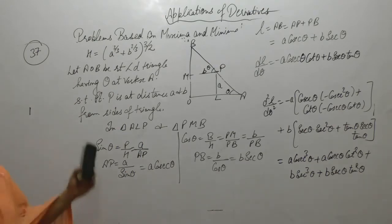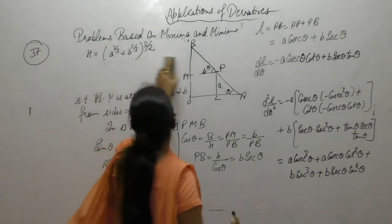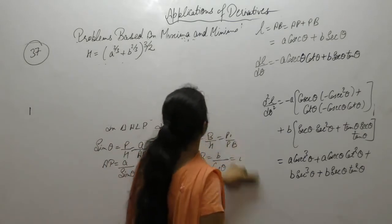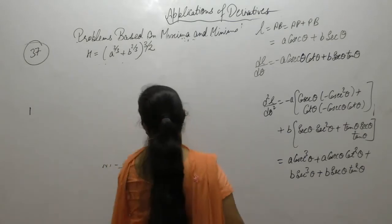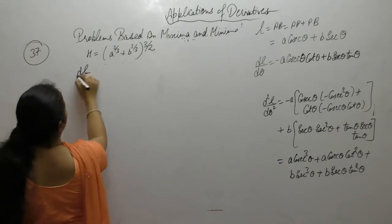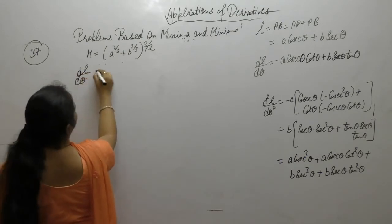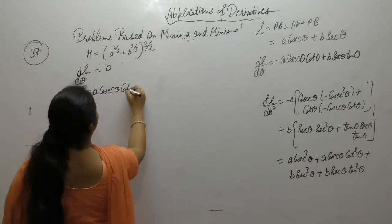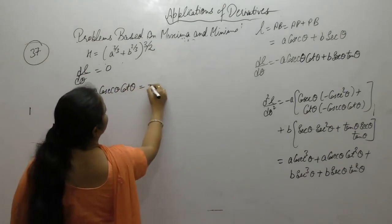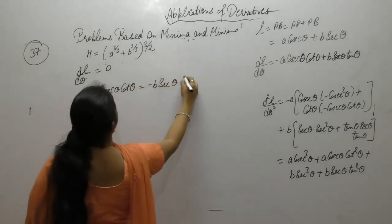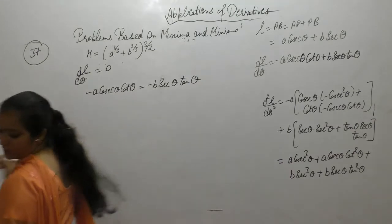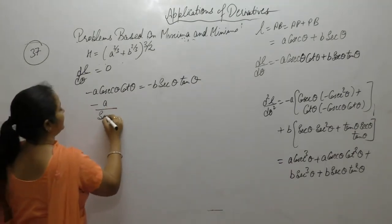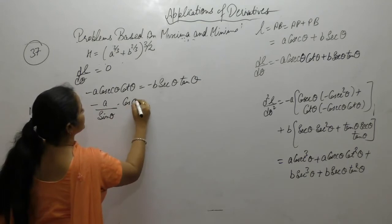Now put the first derivative equal to zero to find the value of theta. So dL/dθ equals zero gives: minus A cosec theta cot theta minus B sec theta tan theta equals zero. We can write cosec as 1 upon sin and cot as cos upon sin.